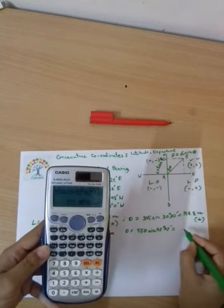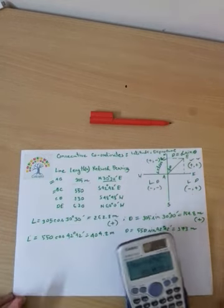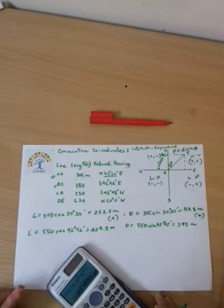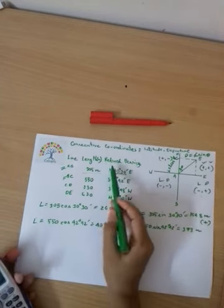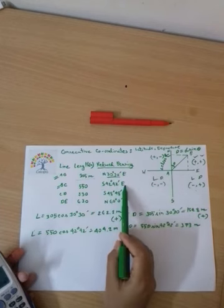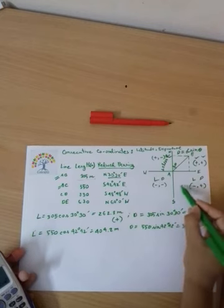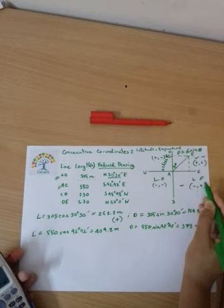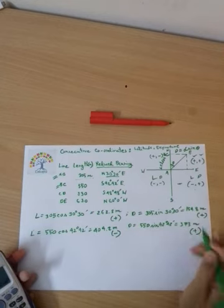Now we check whether latitude and departure are positive or negative by looking at the reduced bearing — the quadrantal bearing. The direction is south-east, which is the second quadrant. In the second quadrant, latitude is negative and departure is positive.